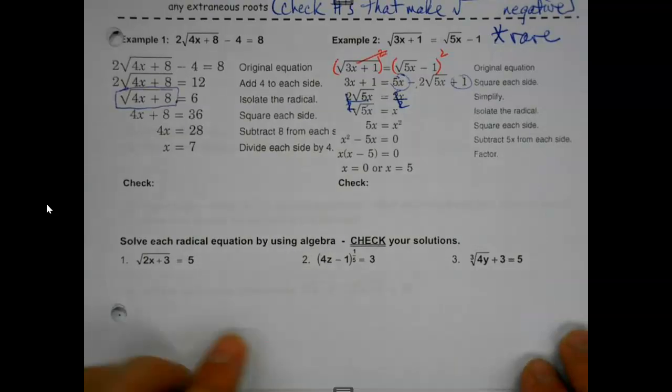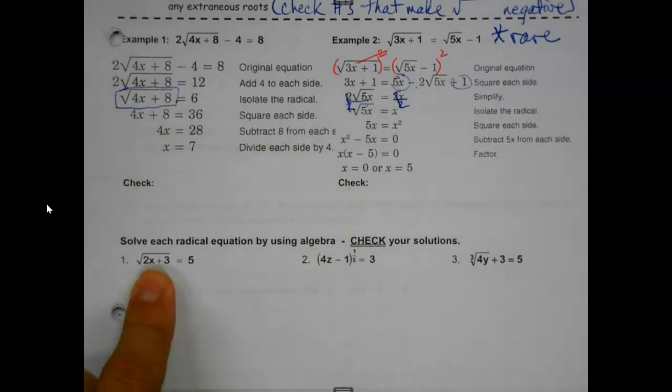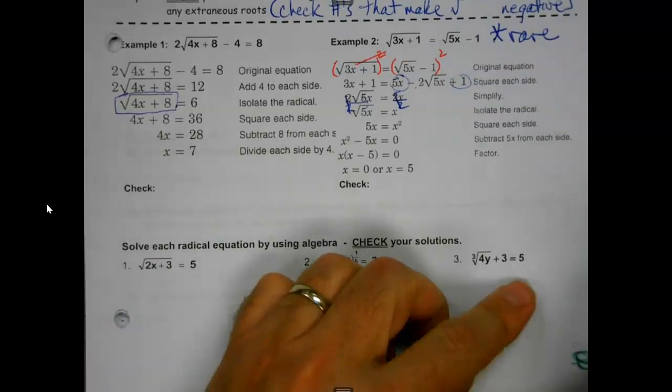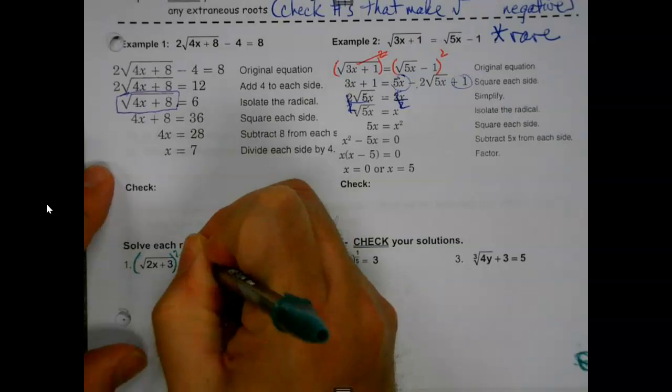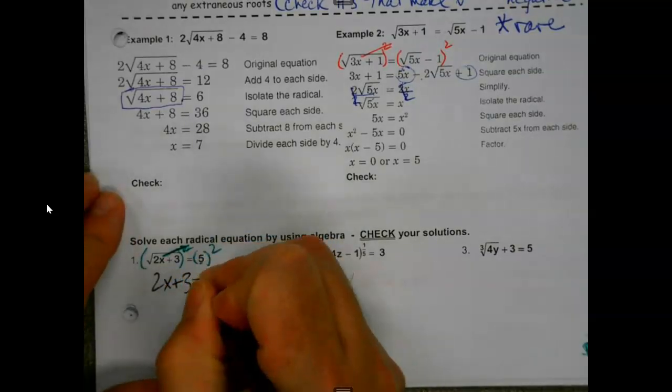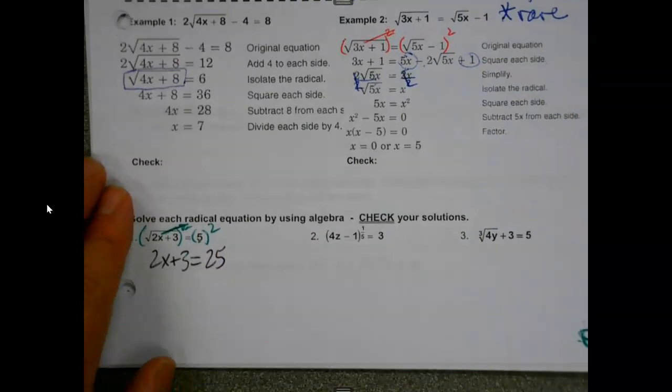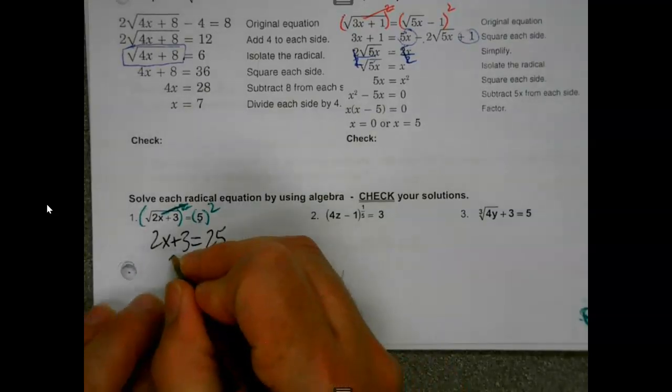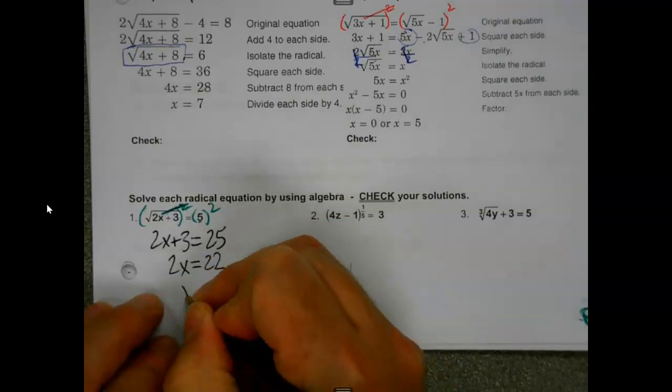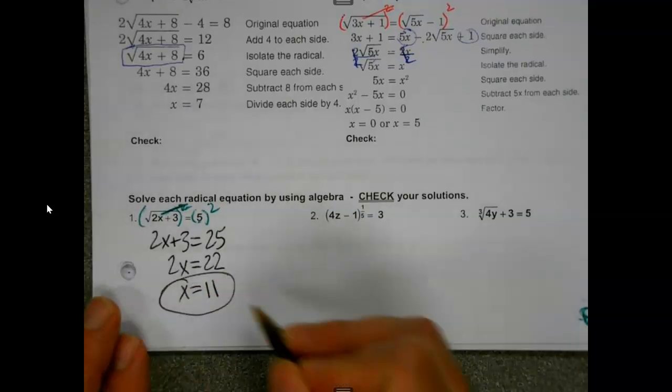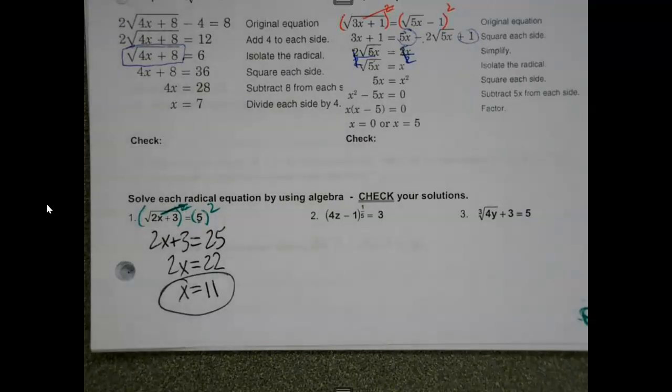So, now that I hopefully haven't completely scared you off. Solve the radical by using algebra. Check your equations. Radical is already by itself. Nice. Since the radical is already by itself, squared and square root cancel. 5 squared is 5 times 5, which is 25. Not 10. Be careful. And now it's just regular algebra 1 equation. Subtract your 3. Divide. Take a quick peek. If I plug in 11, is it going to make it a negative radical? No. Then you're probably about 99.99% sure you're okay. And go on to the next problem.